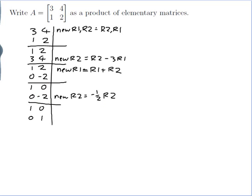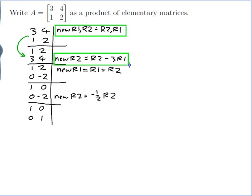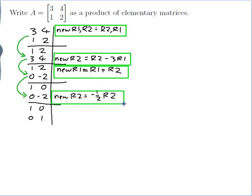By row operations I've figured out how to get from A to the identity. My first row operation turns A into the second matrix; my second turns that into the third; my third turns the third into the fourth; and my fourth turns that into the identity. But I actually don't want to go that way — I want to find the row operations that start at the identity and work up to A.